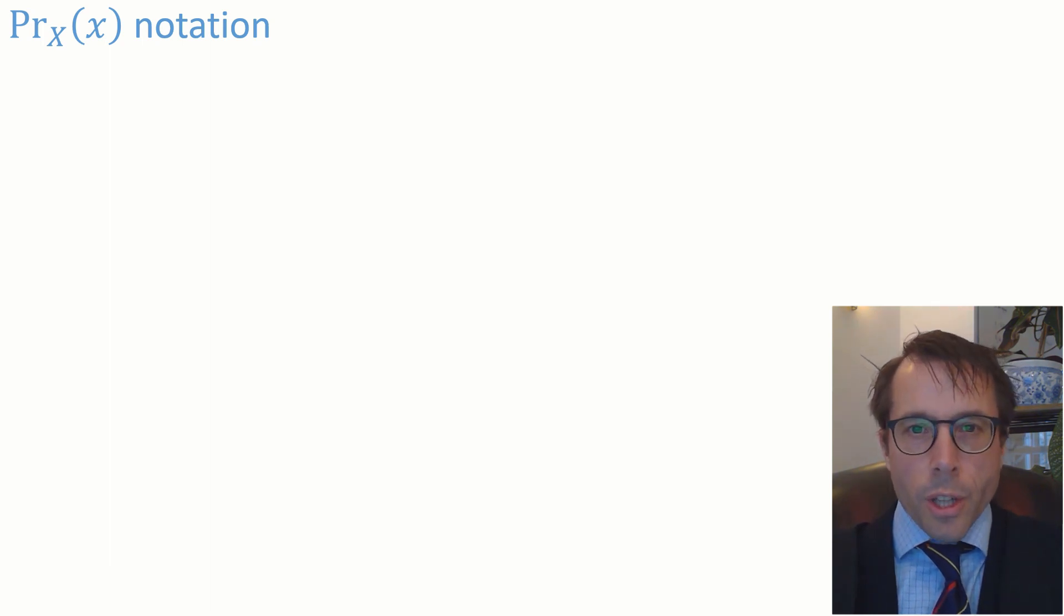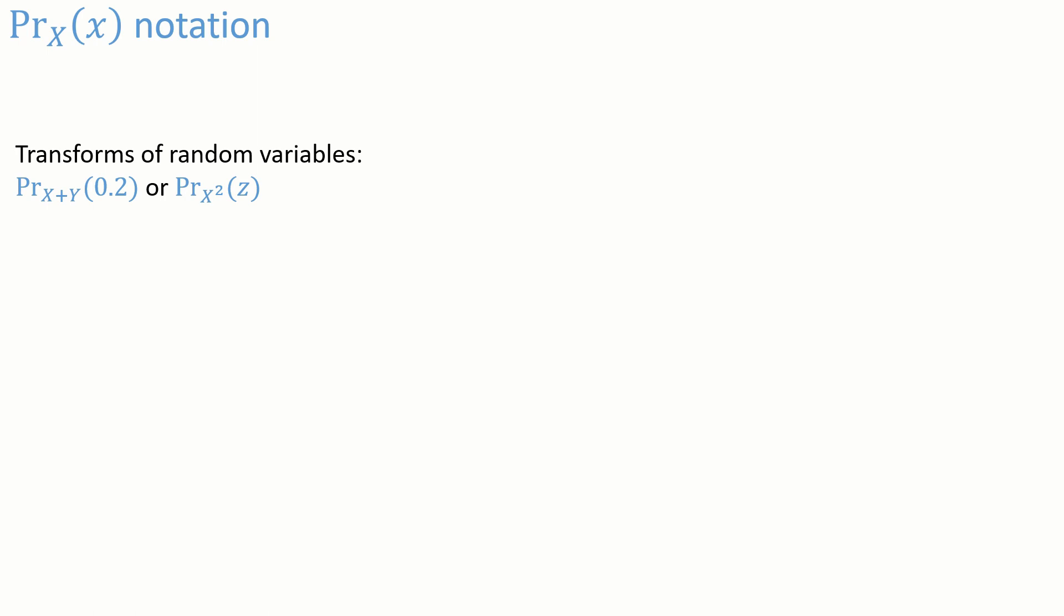Now, the job of this notation is to keep track of two separate things. There's the random variable big X, which is the function that gives different answers each time you call it. And there's the value little x, which is one possible output value. And it's useful to keep both of them in our notation for when we build up more and more complicated probability models like this one here. This says generate X and Y, add them together, and then asks what's the likelihood of getting the outcome 0.2. It's a very, very dense notation, this. It's enough to make any mathematician rub her hands with glee.